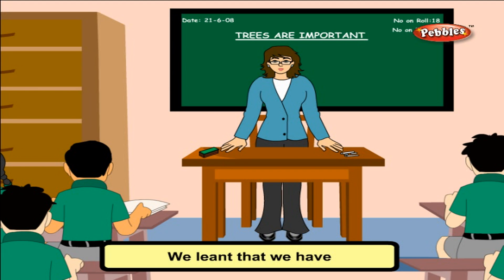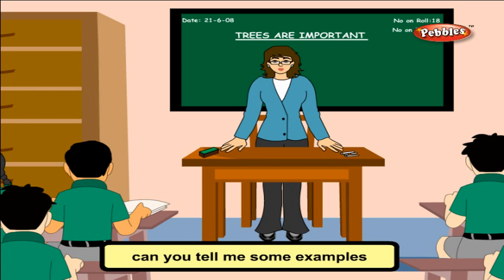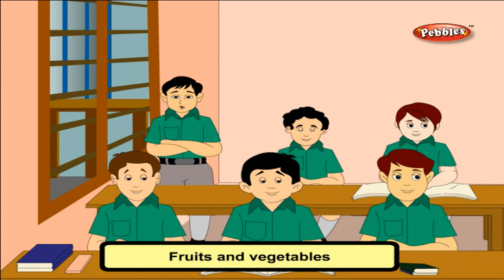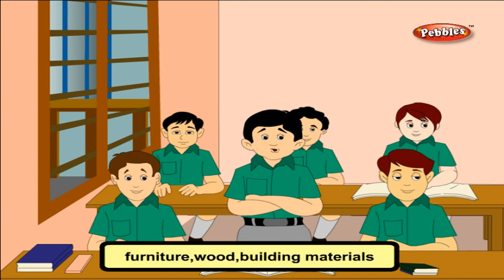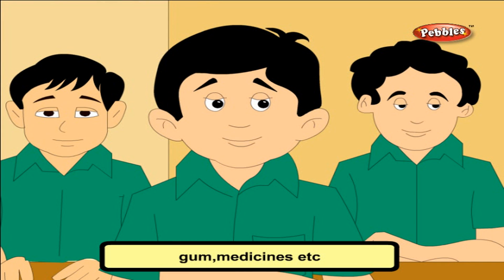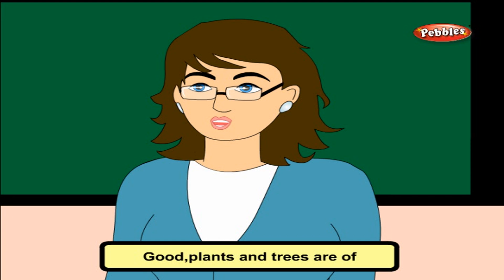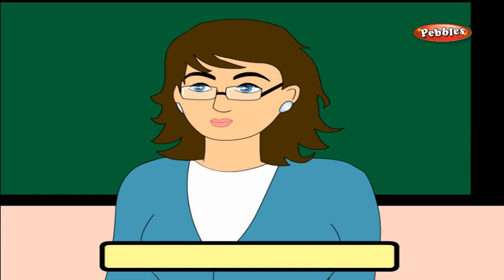We learnt that we have a lot of uses of plants and trees. Can you tell me some examples? Fruits and vegetables, rice and wheat, furniture, wood, building materials, medicines, etc. Good. Plants and trees are of various uses to us.